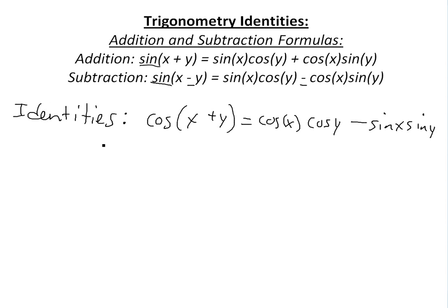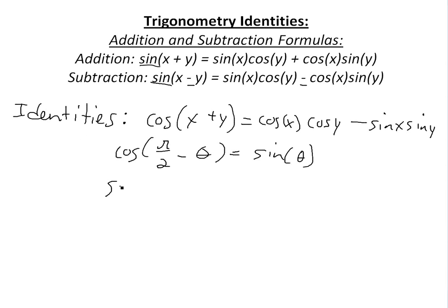Another identity we're going to use to prove this: cosine of pi over two minus theta equals sine theta. See my other video on that as well. And similarly, sine of pi over two minus theta equals cosine theta.